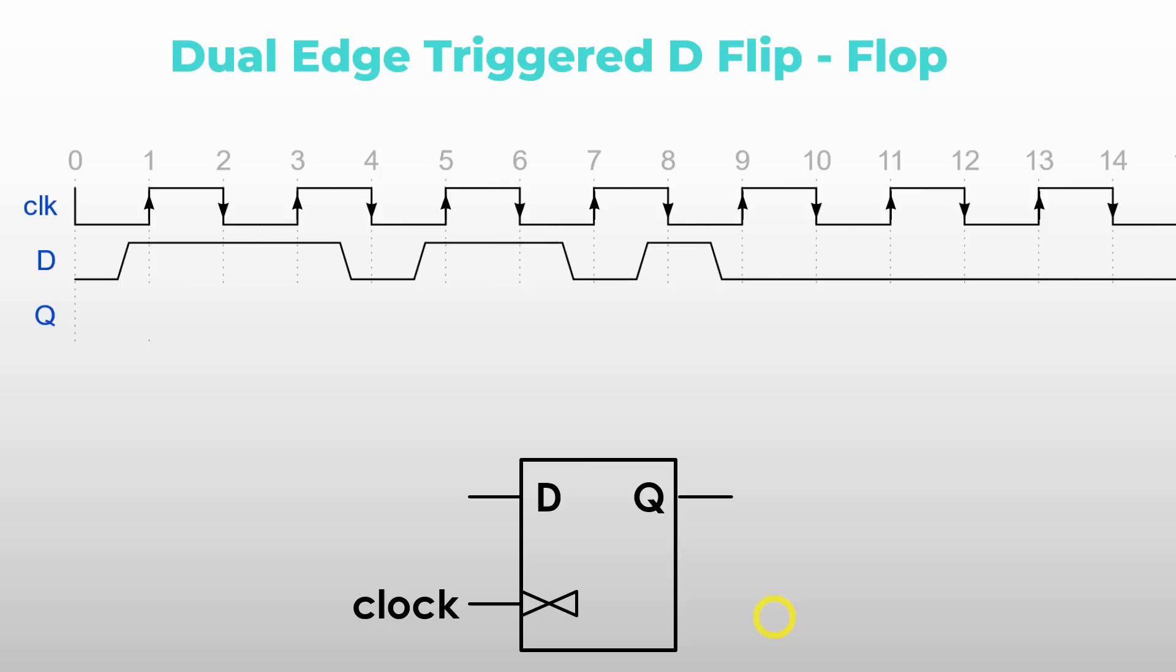Let's go to the dual edge trigger D flip-flop. The symbol for dual edge trigger D flip-flop has an additional triangle here. So, this is how you can distinguish it from the other ones. This one combines the first two D flip-flops, meaning that the output would change if and only if the clock signal is changing from 0 to 1 or from 1 to 0. So, either one of these cases, it's going to change based on that, meaning that this one is a little bit less selfish.